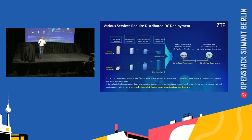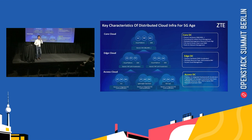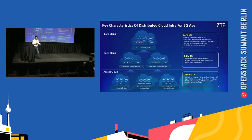We are looking for multi-layer distributed cloud infrastructure architectures. The cloud infrastructure will be hierarchical, divided into a maximum of three layers. First, we have the core cloud where you deploy centralized, latency-insensitive elements.